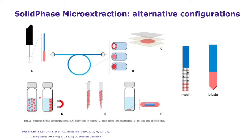In this slide, I show different types of geometries that the technique can allow. You can see the classical fiber geometry, and the in-tube geometry that consists of a capillary that is coated or packed with extraction phase. We have the thin film geometry that allows for enhanced extraction kinetics. And we have different geometries of coated devices including coated mesh and coated blades that allow for direct introduction to mass spectrometry via transmission mode DART or coated blade spray.